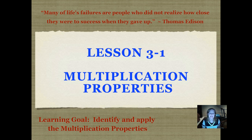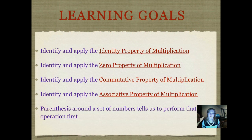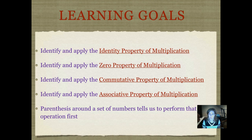The learning goal today is to identify and apply the multiplication properties. Our individual lesson learning goals are to know and understand the identity property of multiplication, the zero property of multiplication, the commutative property of multiplication, and the associative property of multiplication. I'm going to teach you how to identify those and apply them in problems. Also, remember that when you have parentheses around a set of numbers and an operation, it means that we perform that operation first.